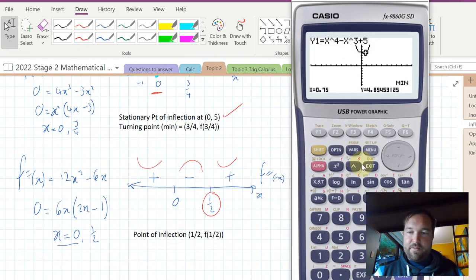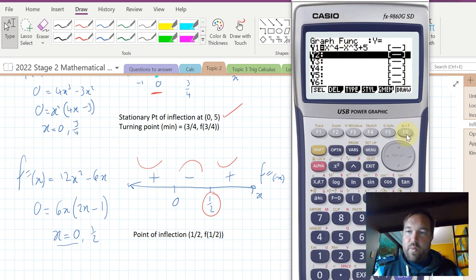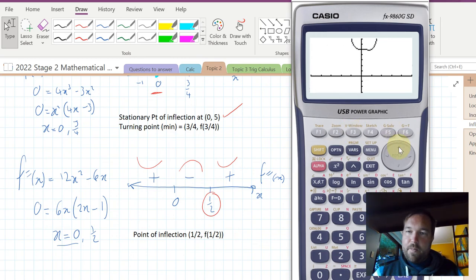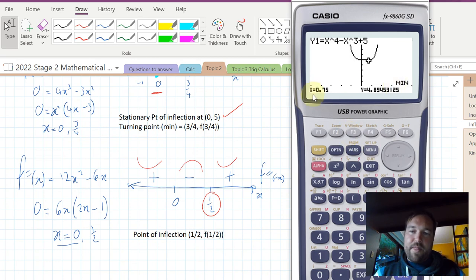If we want to, we can look at what this looks like on a calculator. We've put the function in, we draw it, and yes, my calculator's old. It's not super clear, but we're expecting there is a stationary point of inflection at 0, which we can sort of see. It says there's a point of inflection at a half, where we go from negative to positive. Then we know there's a turning point at three quarters. Using g-solve minimum, x equals 0.75, we can see the turning point, but you're not necessarily going to be able to see every inflection point, which is why we do this algebraically.